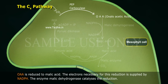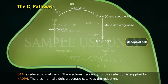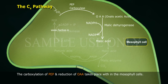Oxaloacetic acid (OAA) is reduced to malic acid. The electrons necessary for this reduction are supplied by NADPH. The enzyme malic dehydrogenase catalyzes this reduction. Both the carboxylation of PEP and the reduction of OAA take place within the mesophyll cells.